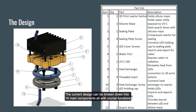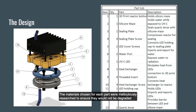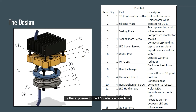The current design can be broken down into 13 main components, all with crucial functions designed to fully contain the radiation and ensure no exposure to any users. The materials chosen for each part were meticulously researched to ensure they would not be degraded by exposure to UV radiation over time.